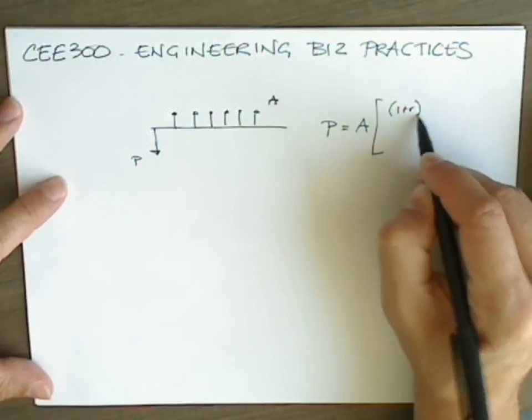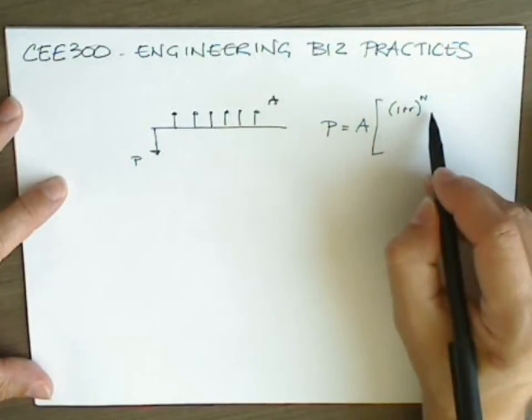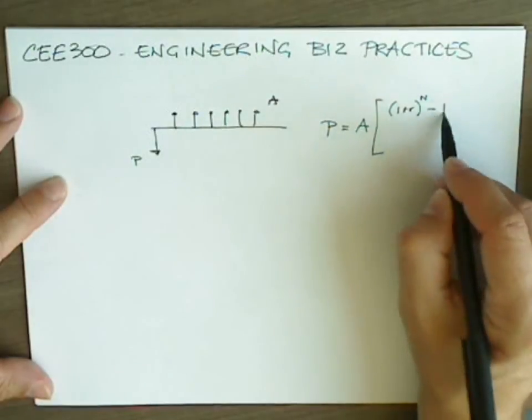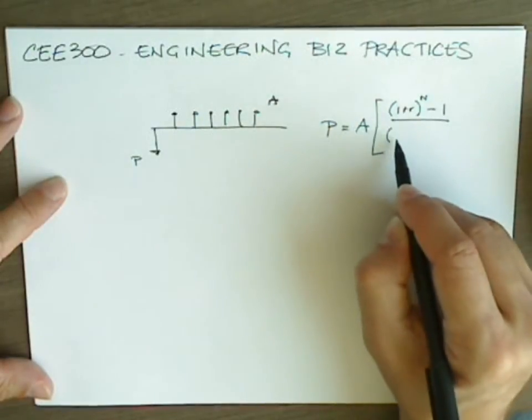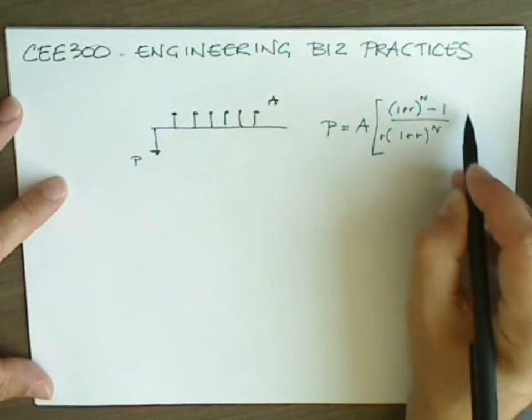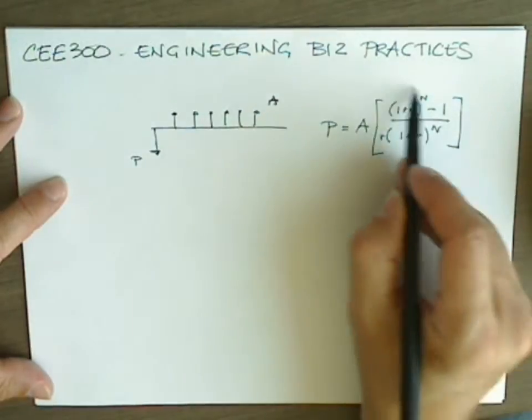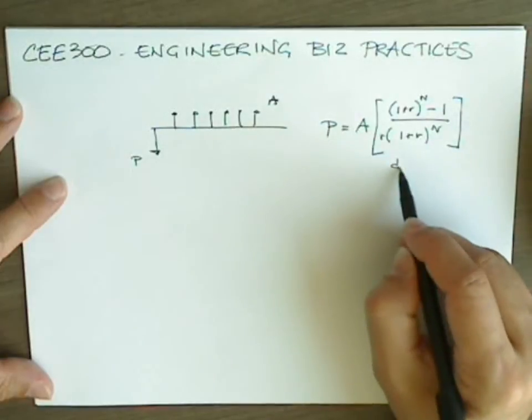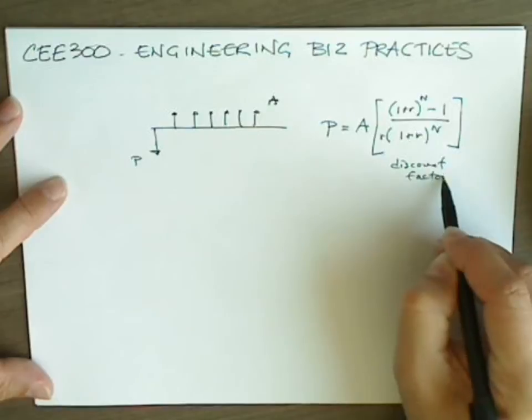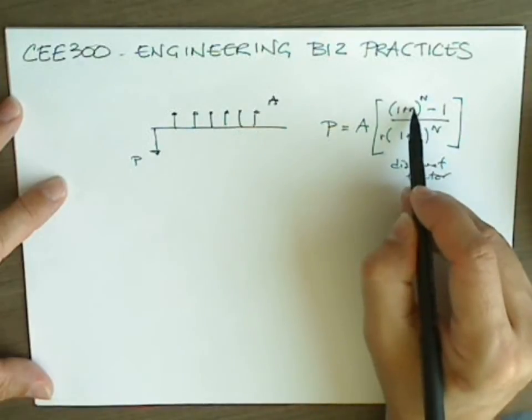R is the discount rate, N is the number of compounding periods, and when we look at all of this together, it's called the discount factor. So in here, R is the discount rate.